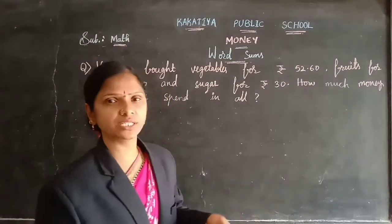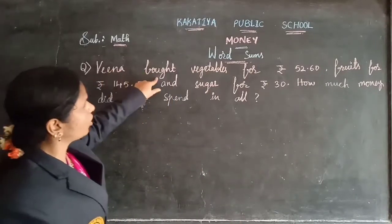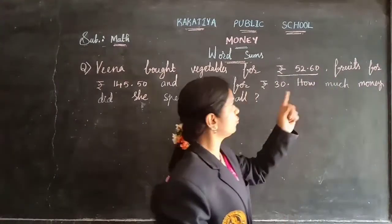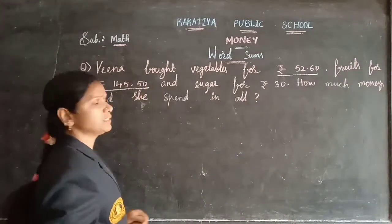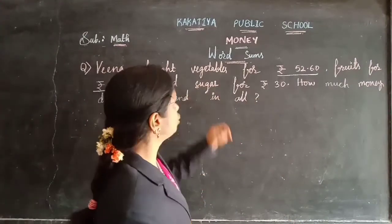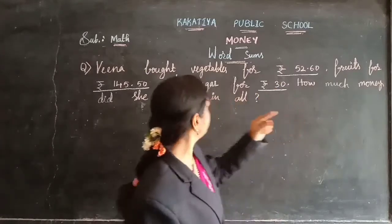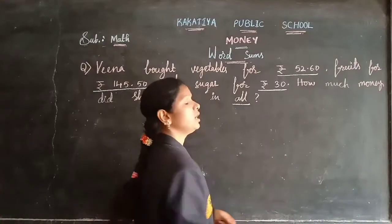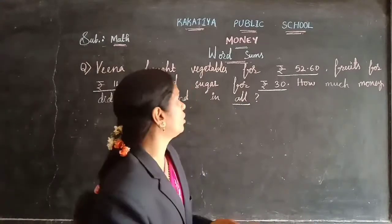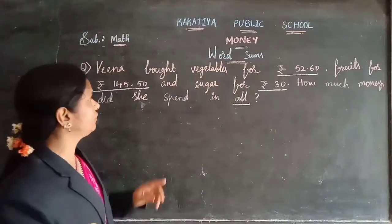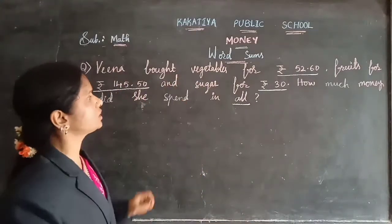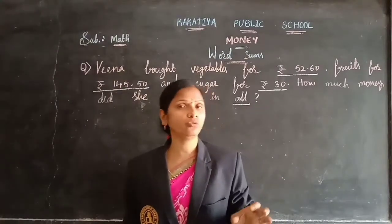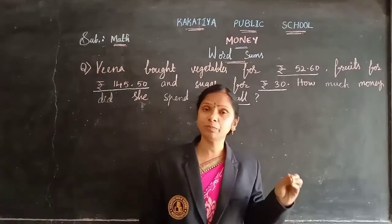Let's do this word sum. What they are given here: Veena bought vegetables for 52 rupees 60 paise, fruits for 145 rupees 50 paise, and sugar for 30 rupees. How much money did she spend in all? In all means you need to do the addition. Veena bought three things — vegetables, fruits, and sugar — and their costs are given. We need to find the total amount she spent.